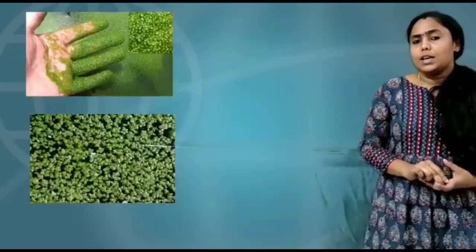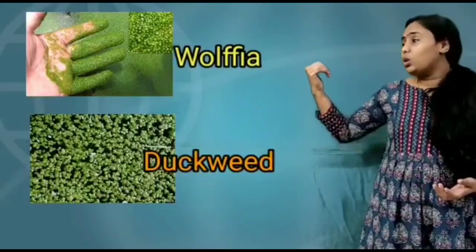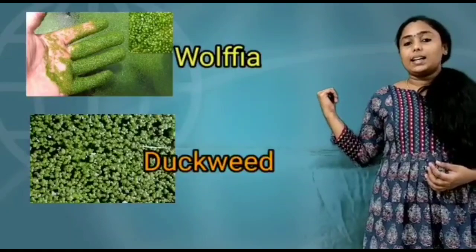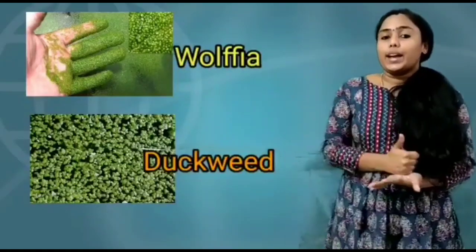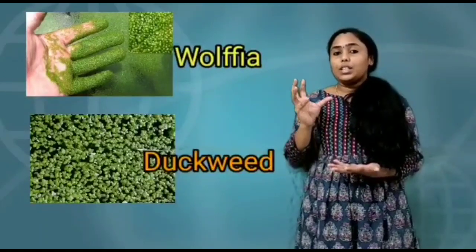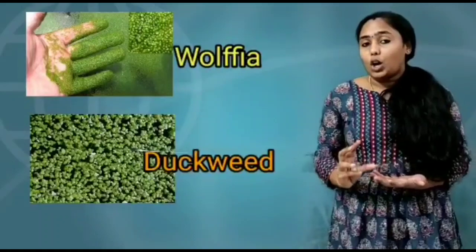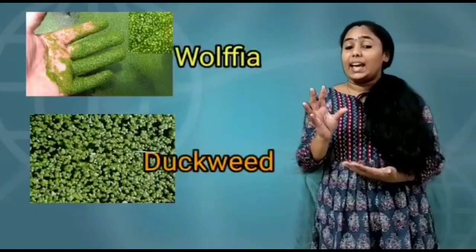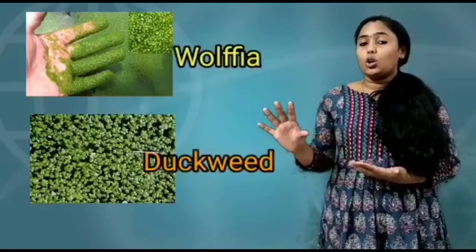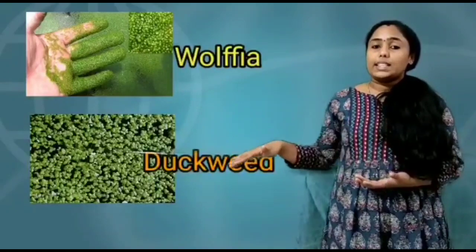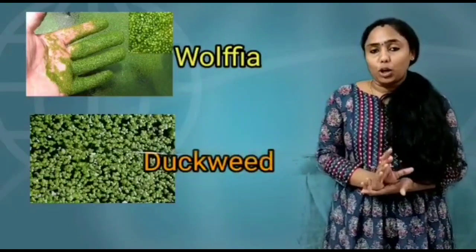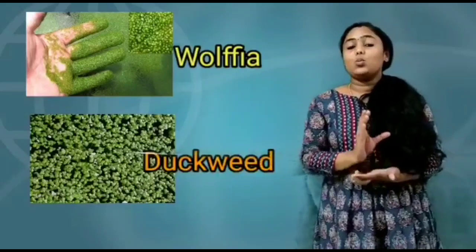Floating plants are the plants which float in the water. Some examples are Wolfia and duckweed. When you see these plants, you can observe that the stems are very lightweight because inside there is free airspace — it is hollow, meaning nothing is filled inside. This feature helps the plant float easily in the water because they have light, weightless bodies.